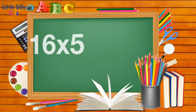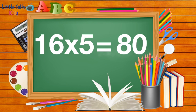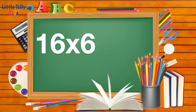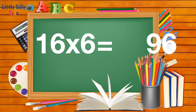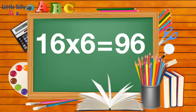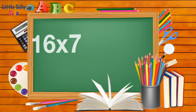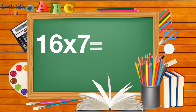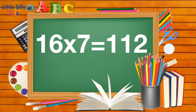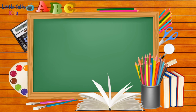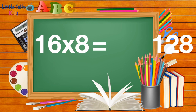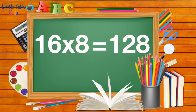16 fives are 80. 16 sixes are 96. 16 sevens are 112. 16 eights are 128.